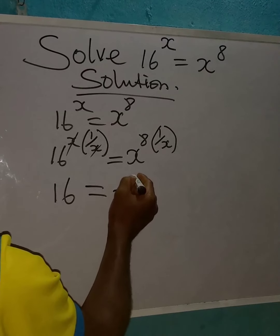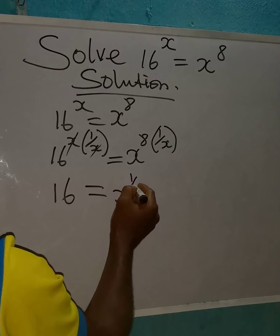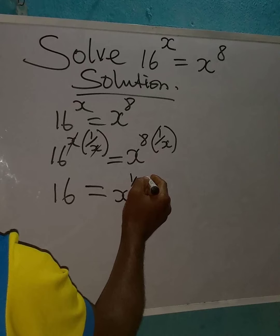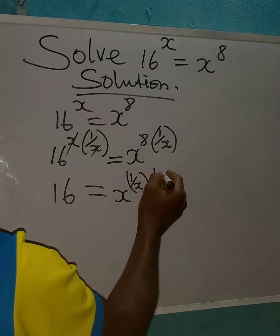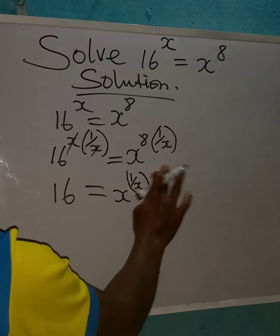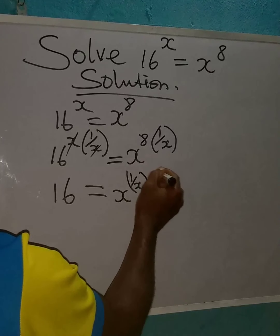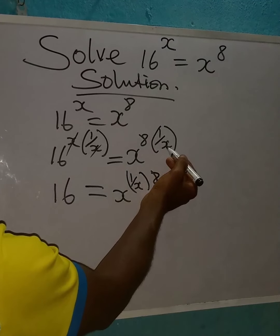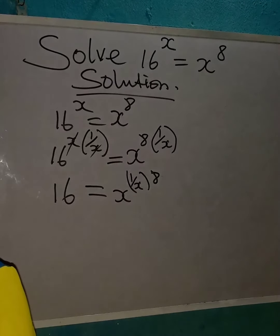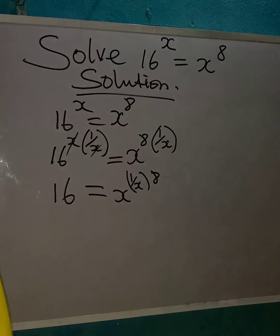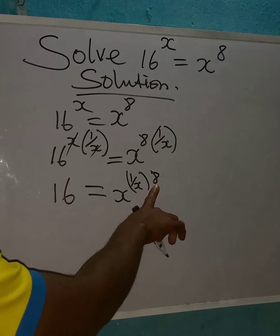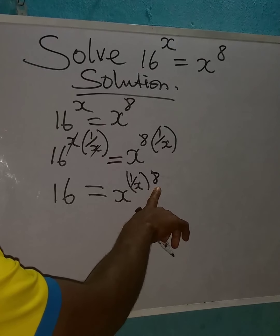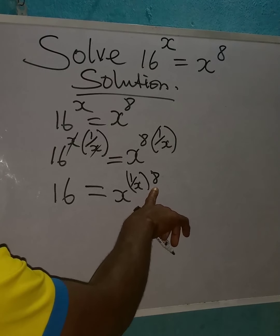On the right-hand side, I can switch the power: I can have x to the power of 1 over x, and this will be multiplying 8. So I brought that one first before the 8. Now what I'm trying to do again is to eliminate 8 from that side.